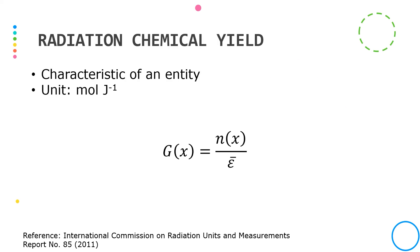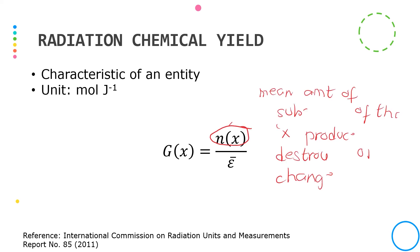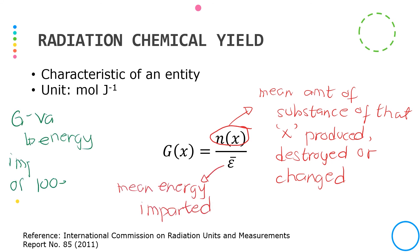We define radiation chemical yield G(X) of a certain entity X as the quotient of N_X by epsilon, where N_X is the mean amount of substance of entity X produced, destroyed, or changed in a system by the mean energy imparted epsilon to the matter of that system. A related quantity, the G-value, is defined as the mean number of entities produced, destroyed, or changed by an energy imparted of 100 electron volts.